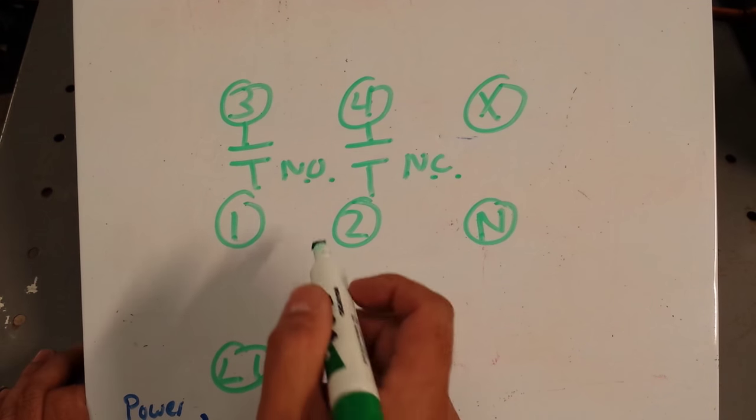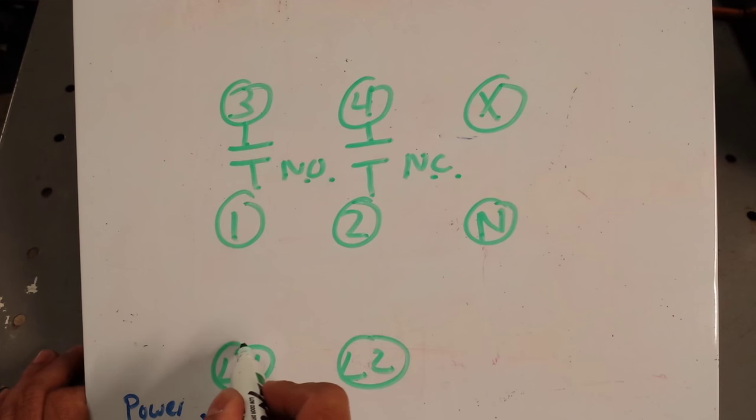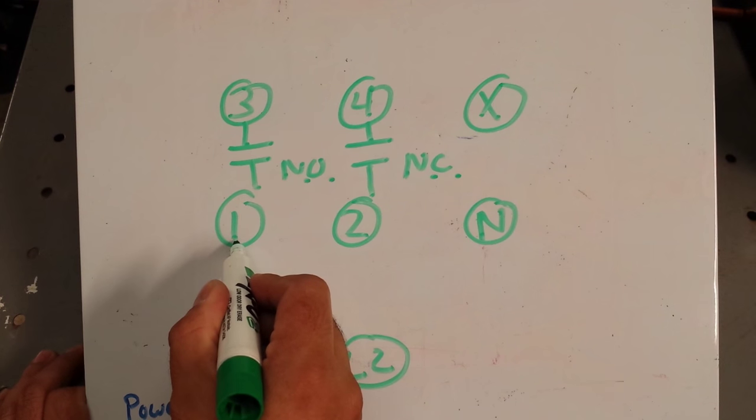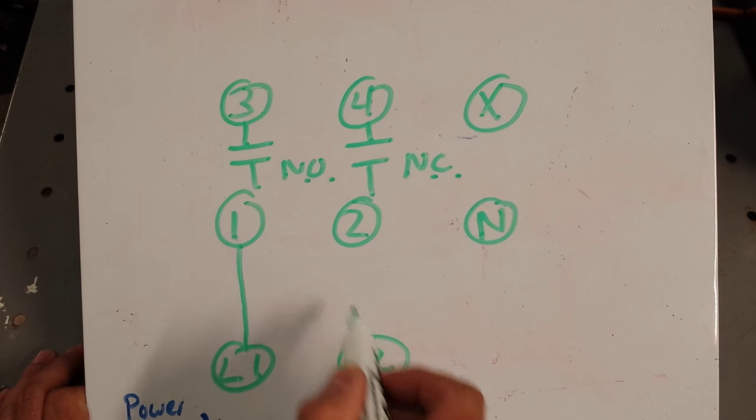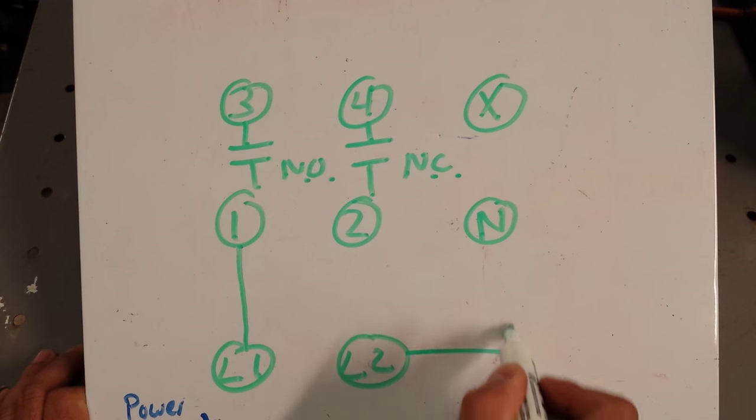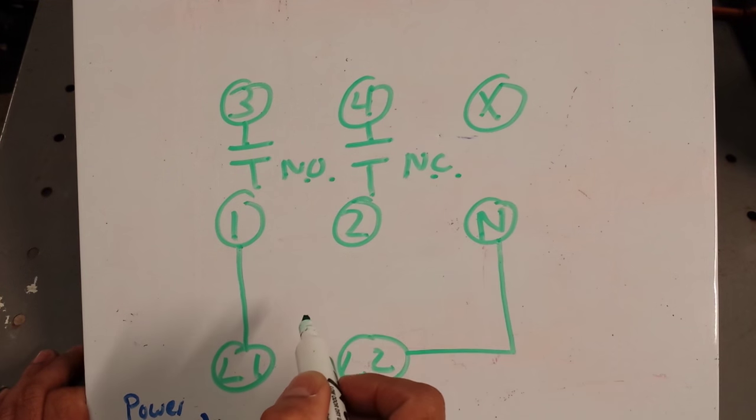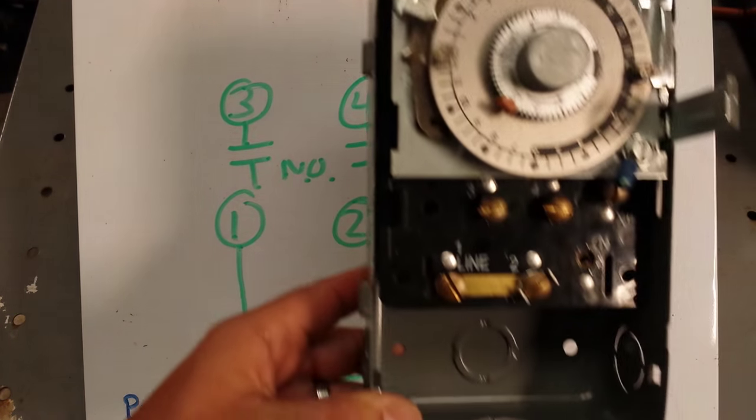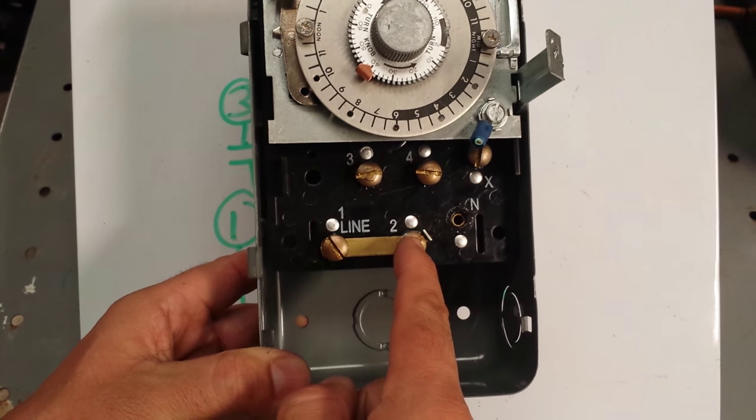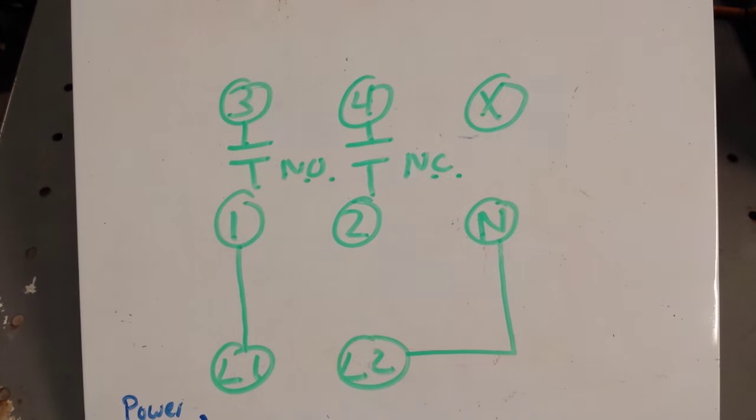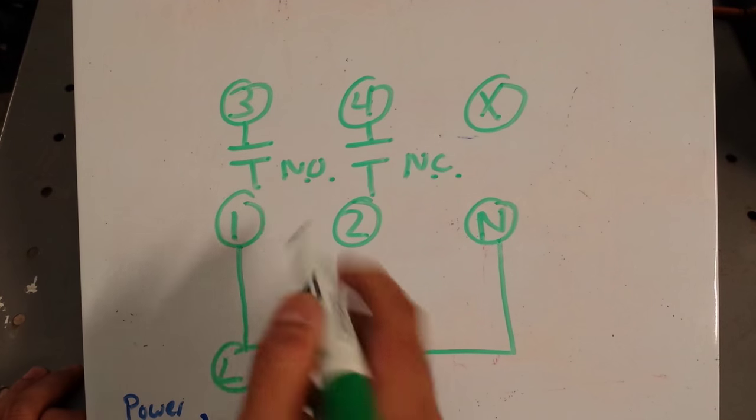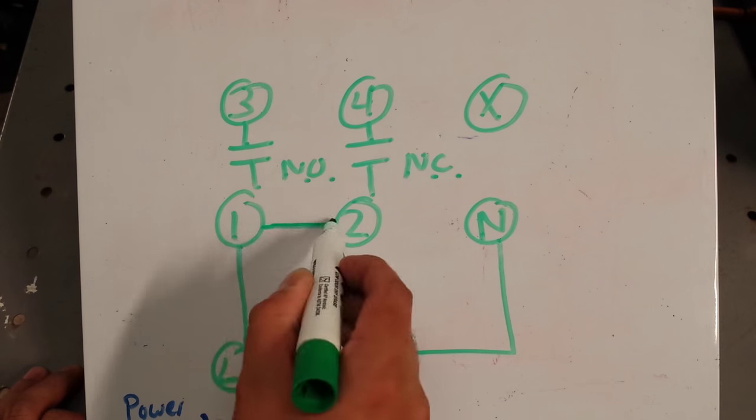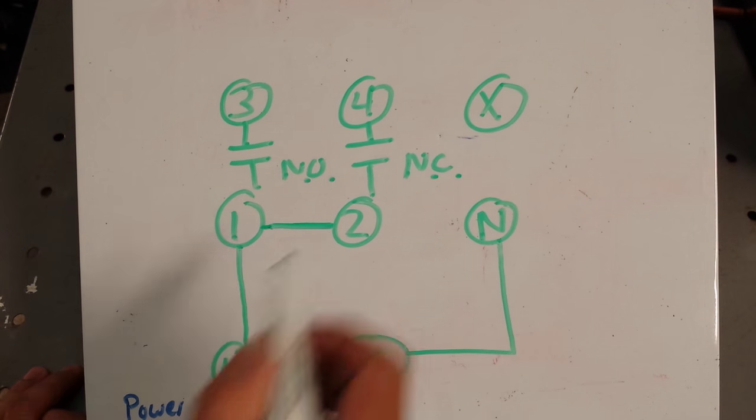So if you remember correctly, we had L1 feeding our terminal 1 to our time clock. And then L2 feeding power to terminal N. You'll also remember, and I'll show that clock again, there's a jumper between 1 and 2 here. So L1 feeds 1, and then there's a jumper between there. So L1 actually feeds terminals 1 and 2.